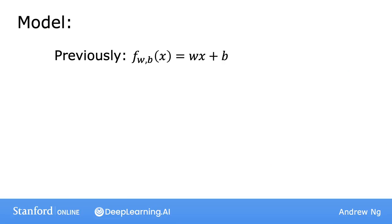Previously, this is how we defined the model, where x was a single feature, so a single number. But now with multiple features, we're going to define it differently. Instead, the model will be f_w,b of x equals w1 x1 plus w2 x2 plus w3 x3 plus w4 x4 plus b.